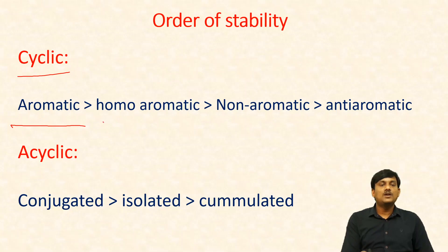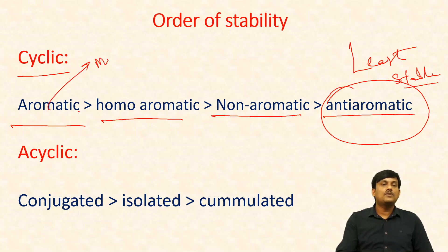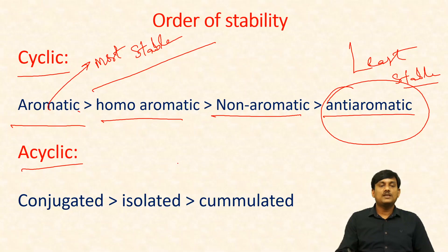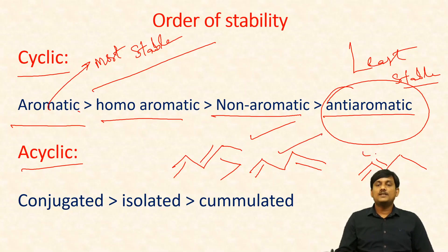In cyclic compounds, the stability order is aromatic > non-aromatic > anti-aromatic, with anti-aromatic being least stable. For acyclic compounds, the stability order is: conjugated > isolated > cumulated. Delocalization of pi electrons in conjugated systems leads to stability, whereas in anti-aromatic compounds delocalization leads to instability.